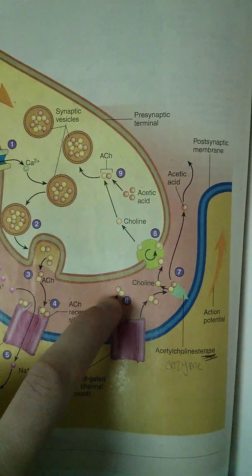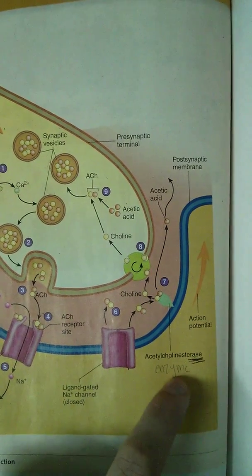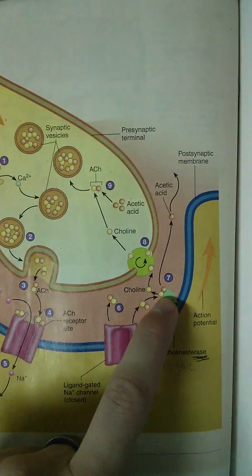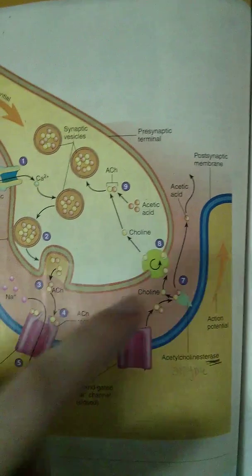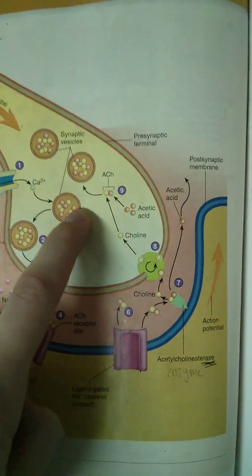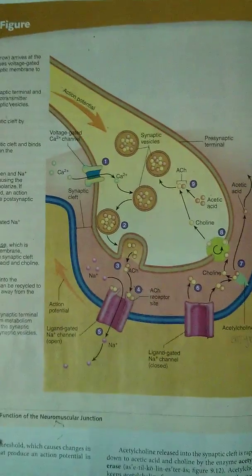the acetylcholine releases from the channel. The channel closes. Acetylcholine esterase, an enzyme comes in, breaks down acetylcholine into two parts, acetic acid and choline. Choline is recycled to make more acetylcholine. And acetic acid just goes away. And that is all.